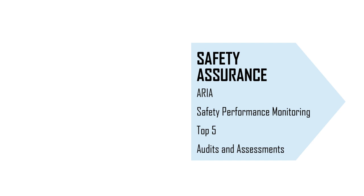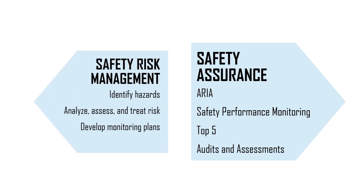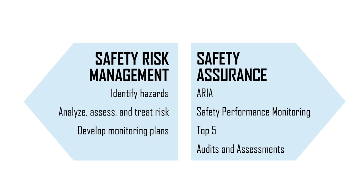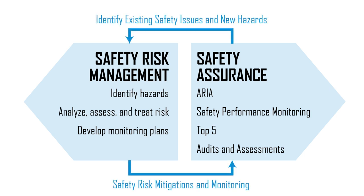Safety assurance is the performance-oriented component of the SMS. It entails collecting and assessing data to evaluate the performance of safety measures and to identify safety trends. Safety risk management, or SRM, is the process used to identify and address safety risk with regard to air traffic management, communication, navigation, and surveillance services. It is a common misconception that SMS and SRM are synonymous; however, SRM is only one component within the ATO's SMS.